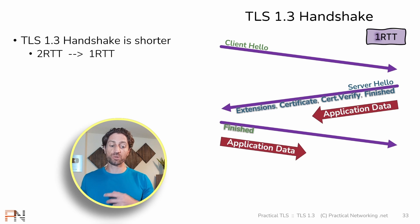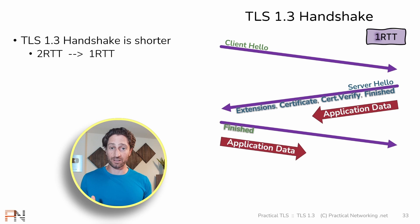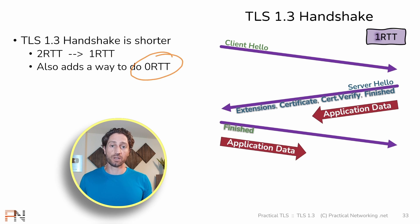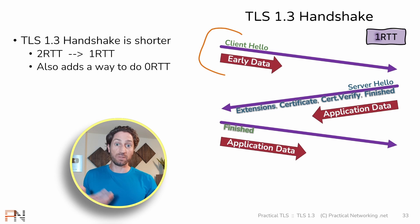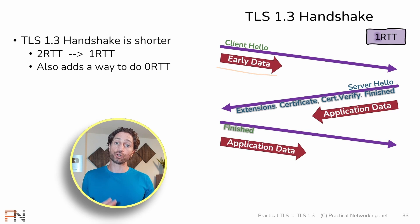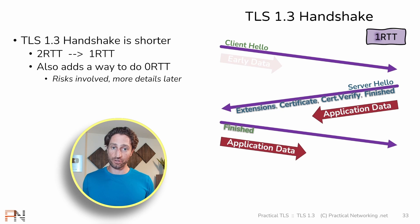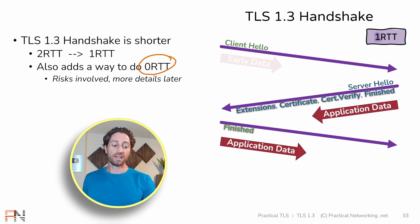To summarize: TLS 1.2 and prior required two round trips for the handshake to complete; TLS 1.3 can do it in one. But can we do better? Yes — TLS 1.3 also allows a zero round trip handshake. The client can actually send encrypted application data along with the client hello in the very first message, reducing the time to first byte to immediately, hence zero round trips. This is called sending early data — data sent earlier than normal application data. Sending early data does have some security implications, which will be covered in a dedicated lesson.